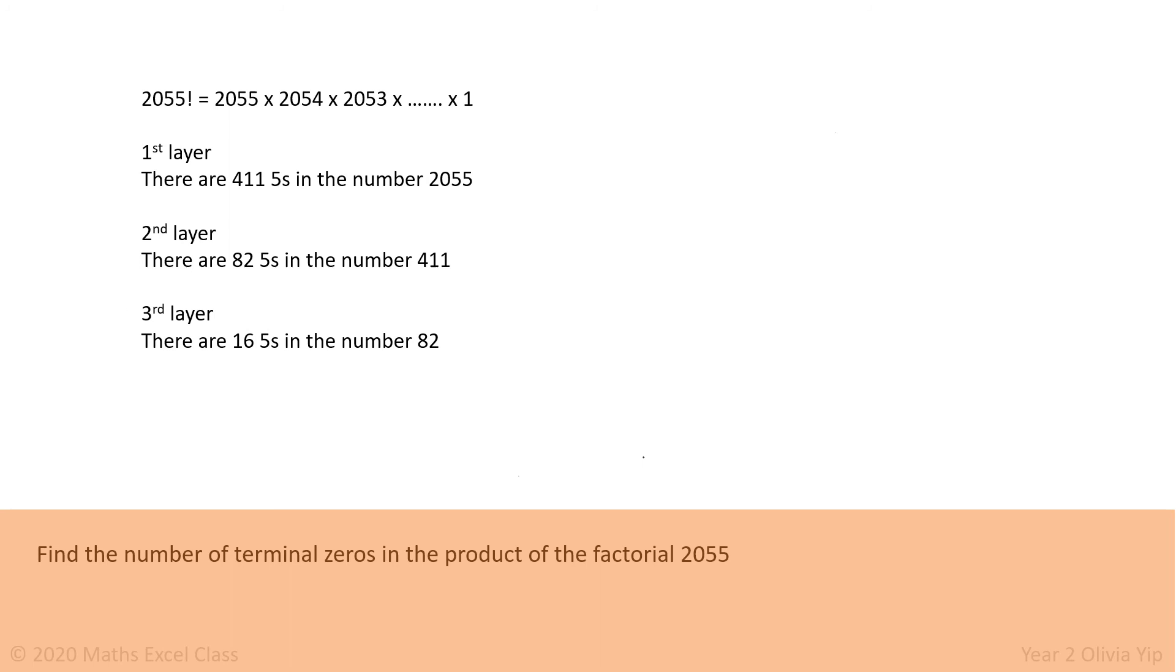Third layer: There are 16 fives in the number 82. Fourth layer: There are 3 fives in the number 16. You can't divide the number 3 by 5 anymore.